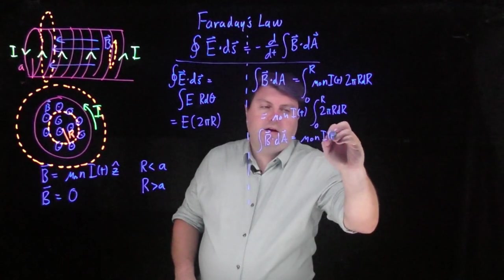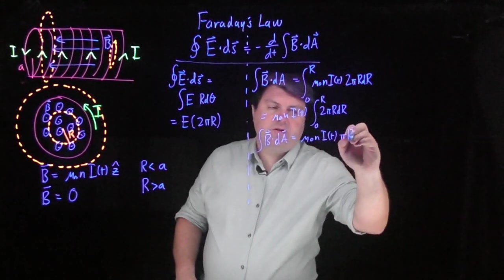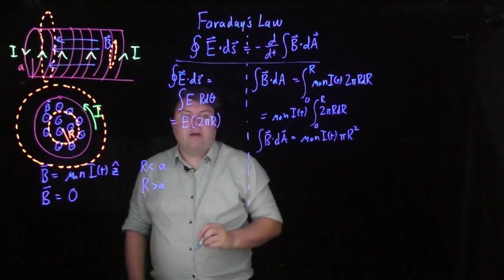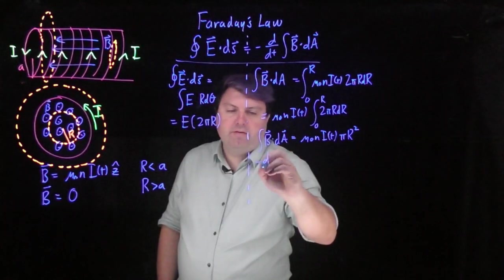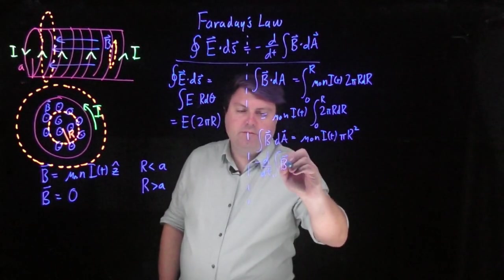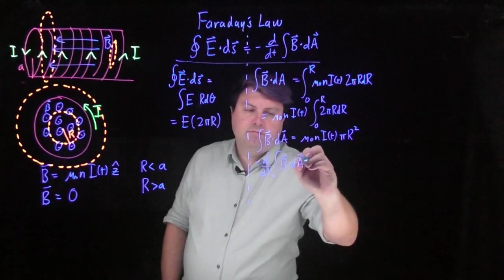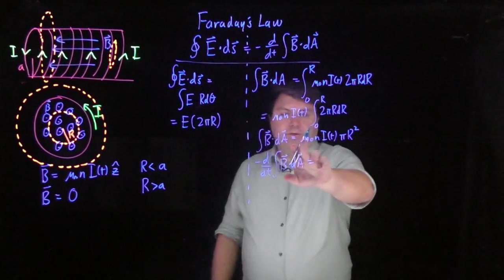So we get that our integral of B dot dA is equal to mu naught n i of t times the area of our circle, pi r squared. And then our negative derivative of B dot dA is we look through here and we find out what we need to take a derivative of.